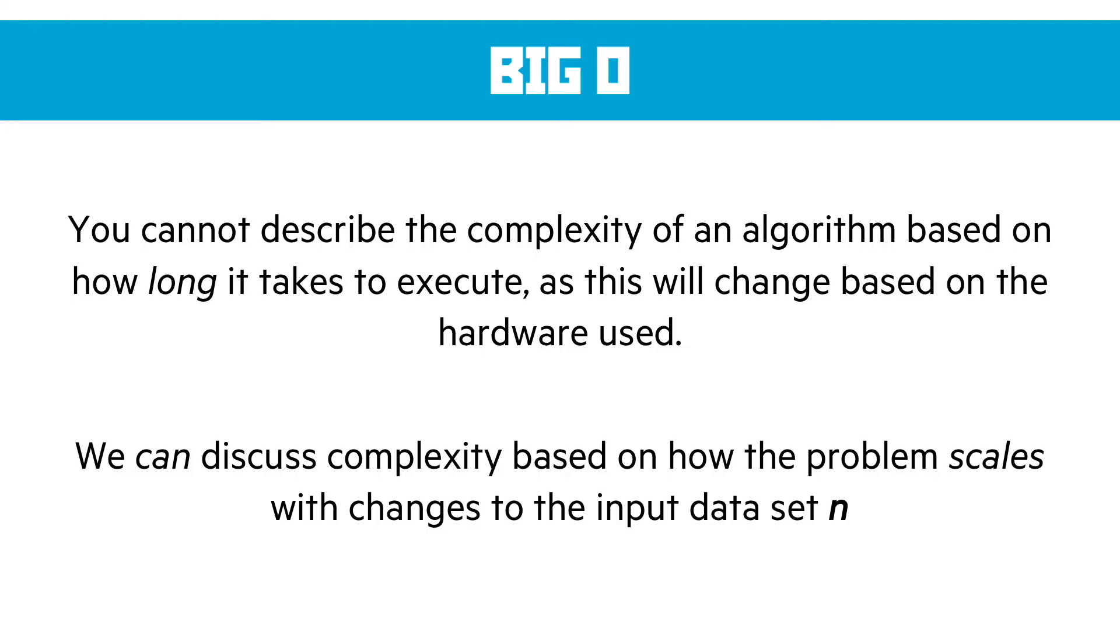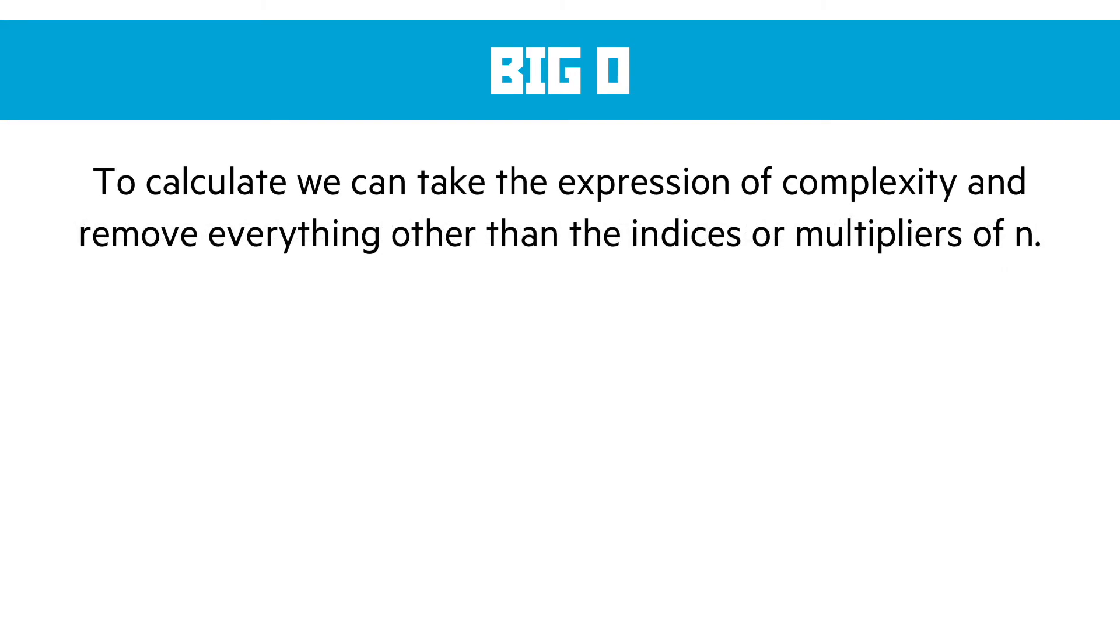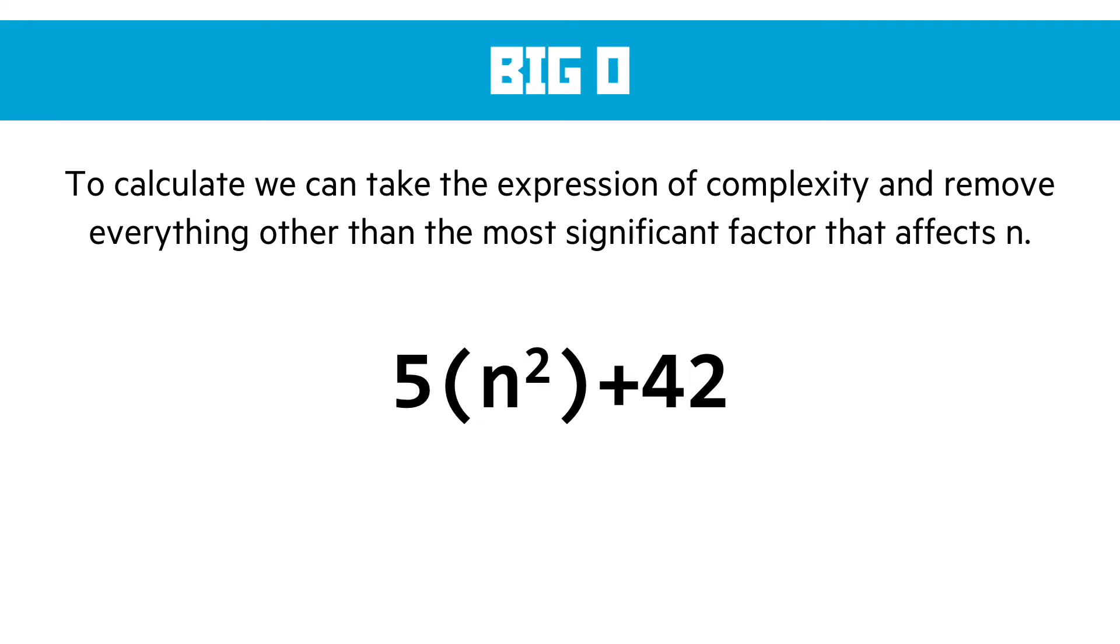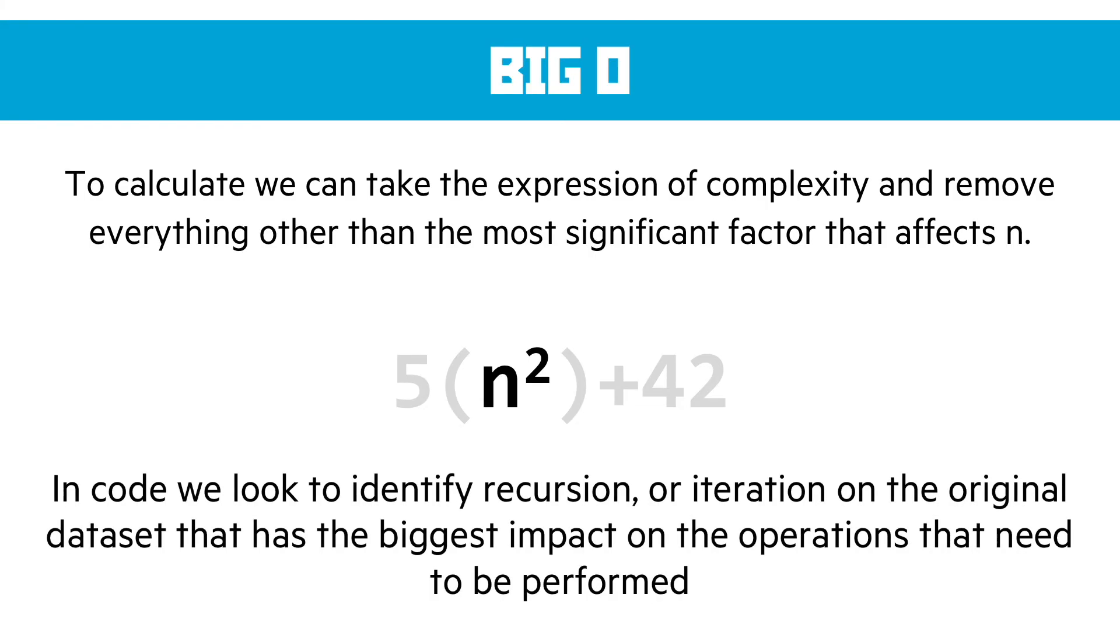What we can discuss is the complexity based on how the problem scales with changes to the input data set, which we'll call N. So in other words, how does it affect the runtime of the algorithm if we double the data set, if we quadruple the data set, if we have a million times the data set that we originally put in? Now to calculate this, what we do is we take an expression of complexity and remove everything other than the indices or the multipliers of N. So in this case, what we're doing is taking the expression and removing everything other than the most significant factor that affects N. In this example, we're going to start off by removing insignificant things, things that don't really affect N that much. So for instance, plus 42 in the grand scheme of things, if N was 100 billion, would make no difference. Similarly, the multiplier of 5 is not going to make a massive difference. But the indice there, N squared, is going to make a big difference to how that scales as N increases in size.